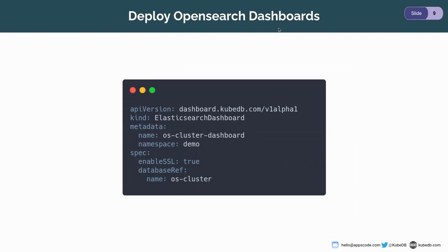OpenSearch dashboard is a custom resource definition that enables you to deploy an OpenSearch dashboard. Its API version is dashboard.kubedb.com/v1alpha1 and the kind is ElasticsearchDashboard. In the metadata section, we provide the name os-cluster-dashboard and deploy it in the demo namespace — the dashboard must be in the same namespace as the OpenSearch cluster. In the spec section, we recommend setting enableSSL to true, and in the database reference field you provide your cluster name, which is os-cluster.